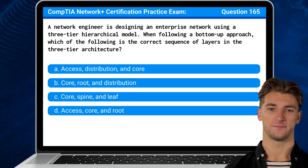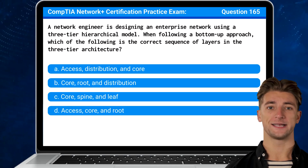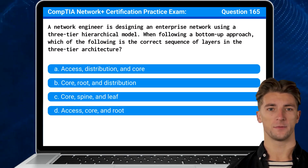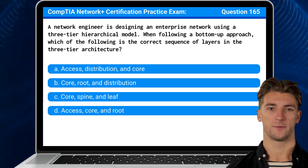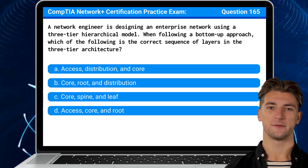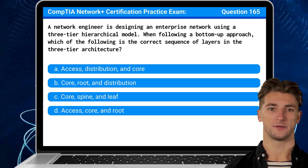Question 165: A network engineer is designing an enterprise network using a three-tier hierarchical model. When following a bottom-up approach, which of the following is the correct sequence of layers in the three-tier architecture?